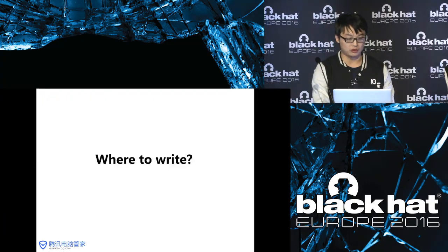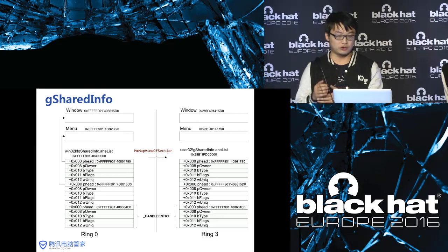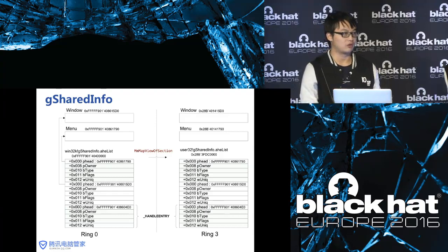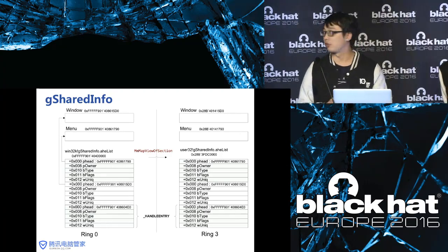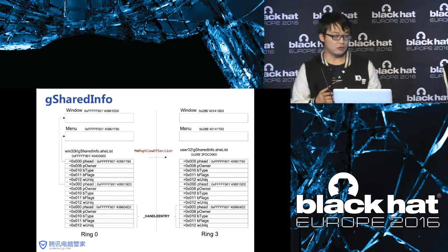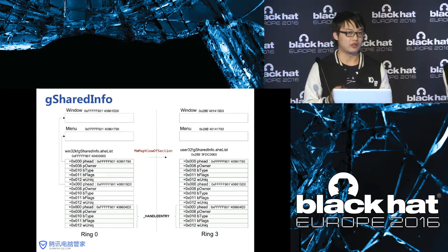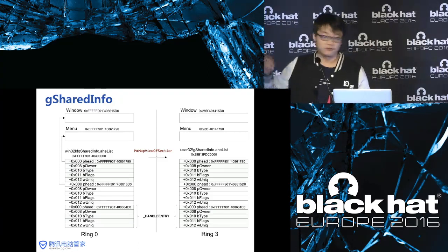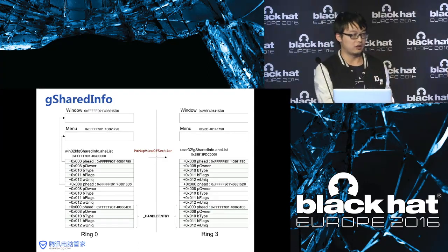Back to the three questions. Microsoft does not allow us to use NtQuerySystemInformation to get the loading address, but there is something they did not catch. This is a structure called g-shared info. The g-shared info has a kernel map in kernel space. But if you load user32.dll, this memory will be mapped into our user space automatically by the function MmMapViewOfSection.